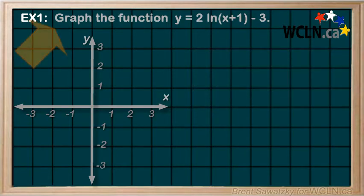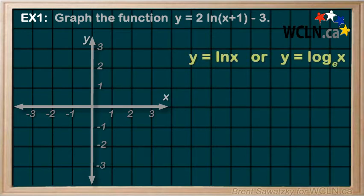Example 1. Graph the function y equals 2 ln(x+1) minus 3. Let's begin by sketching our base function. In this case, the base function would be y equals ln(x) or y equals log base e of x. Same thing.